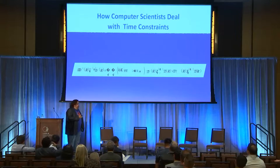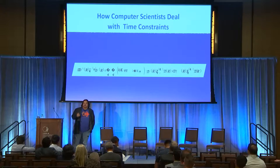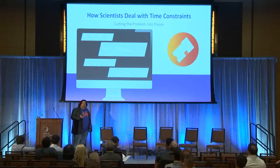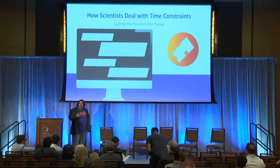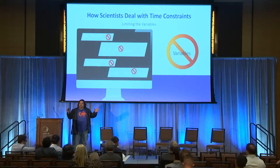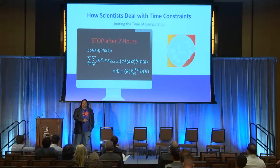Computer scientists still need to deal with this problem — they've got to solve it for the companies that need an answer. So what are the tricks and techniques they use? One thing they do is cut the problem up into smaller pieces, solve the small pieces, and then merge the information back together. Or they'll limit the number of variables and constraints to get the problem small enough to solve in the required time frame.